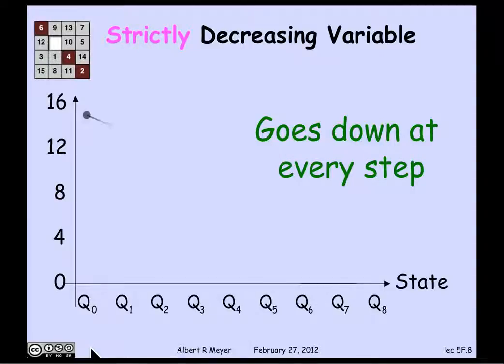So in general, the concept of a strictly decreasing variable is one, as shown here, that at every step of the state machine in each transition, it gets strictly smaller.